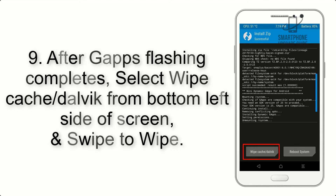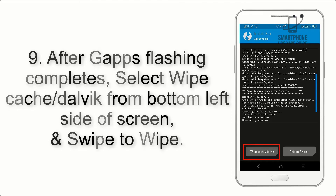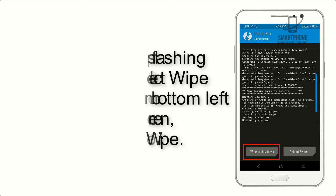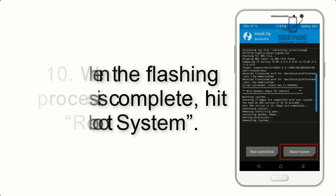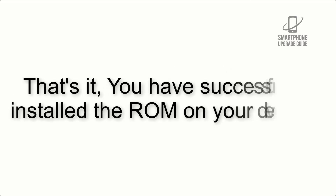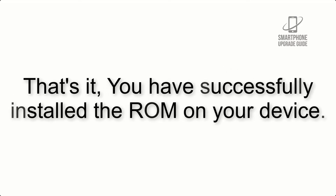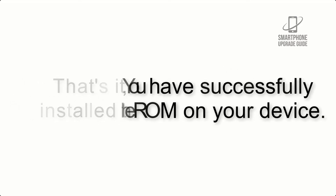Step 9: after GApps flashing completes, select Wipe Cache and Dalvik from the bottom left side of the screen and swipe to wipe. Step 10: when the flashing process is complete, hit Reboot System. That's it — you have successfully installed the ROM on your device.